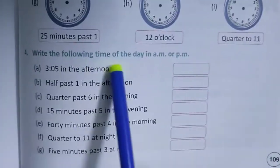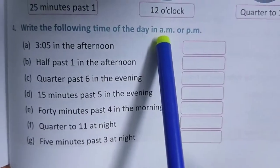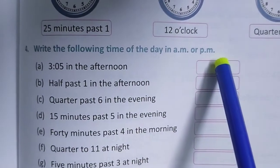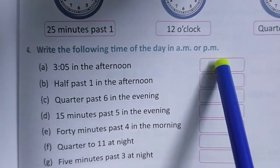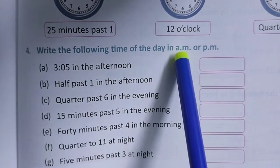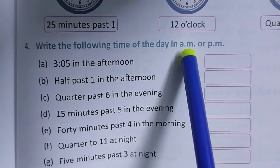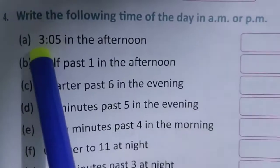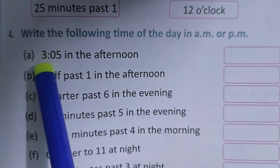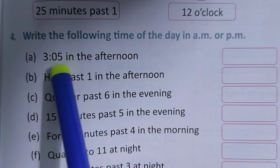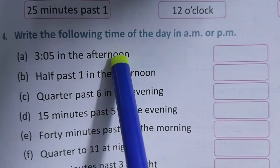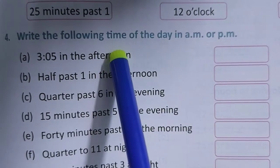Then number 4. Write the following time of the day in AM or PM. AM means, 12 midnight to 12 noon, it will be AM. After 12 noon to 12 midnight, it will be PM. 3:05 in the afternoon. Then it will be, afternoon means PM. After 12 means PM.